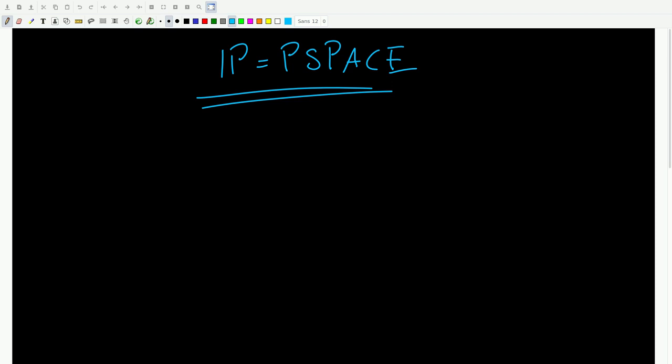Alright, so that's the intro for IP equals PSPACE. This theorem establishes that everything that can be proven with an interactive proof, IP, can also be computed with polynomial memory or space, hence the name PSPACE. And more importantly for our two protagonists, it also establishes the reverse. Everything that can be computed with a polynomial amount of memory can also be proven with an interactive proof.